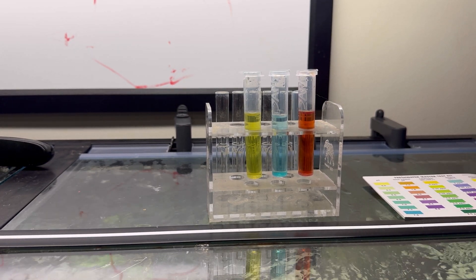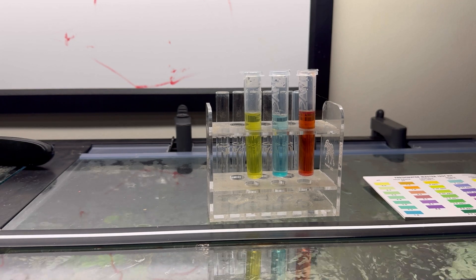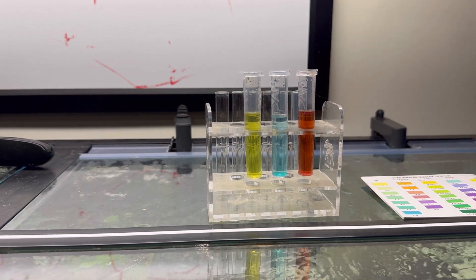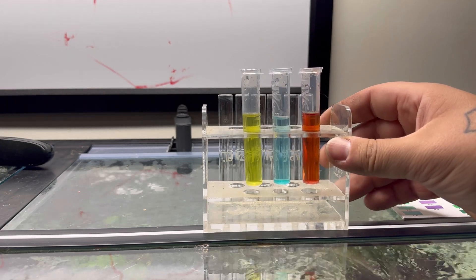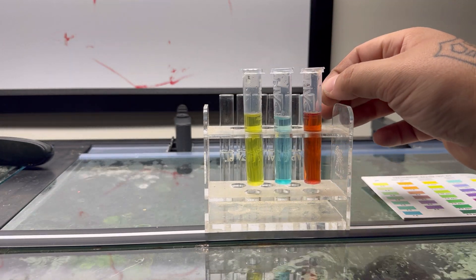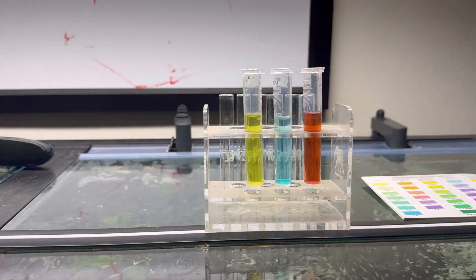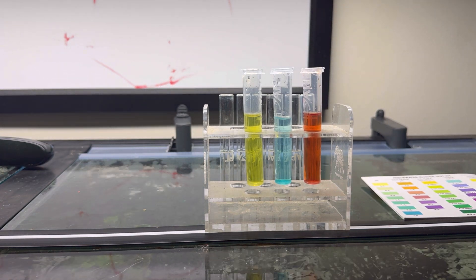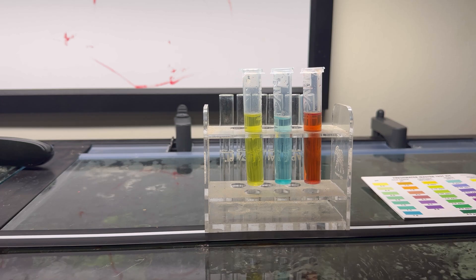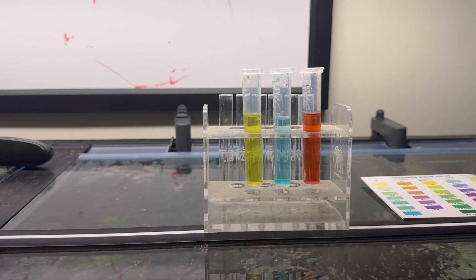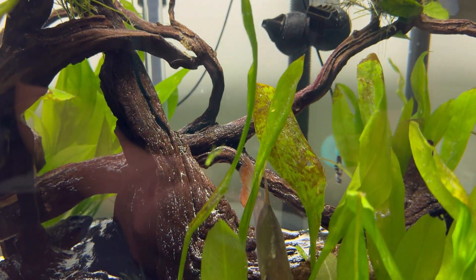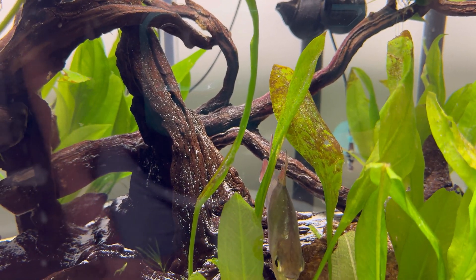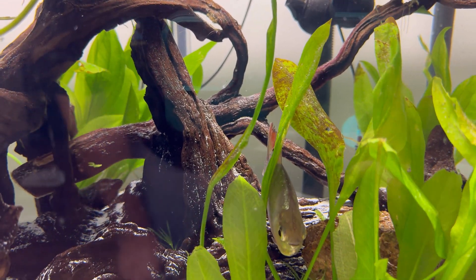Moving on from nitrite to nitrate, our last and final byproduct from that beneficial bacteria is the least harmful. It can be harmful in high amounts, but at low amounts, 40 ppm or below, it's not going to cause much damage at all to your fish. It's going to rather, as we can visibly see here, cause an unsightly algae bloom such as that brown algae or detritus as some people call it.